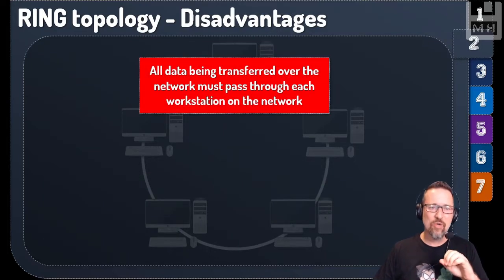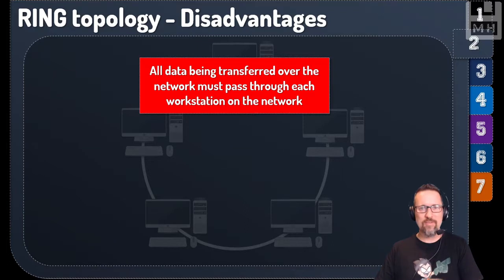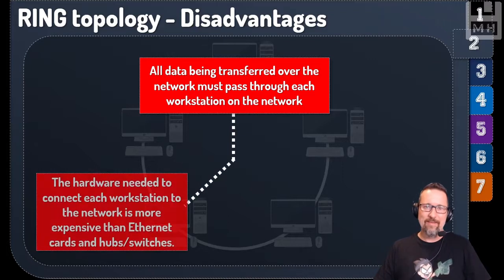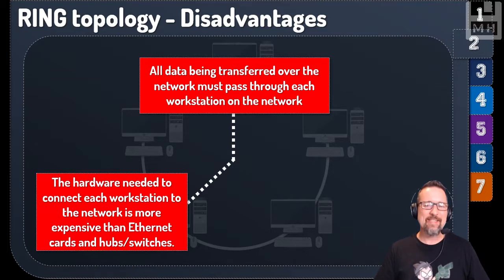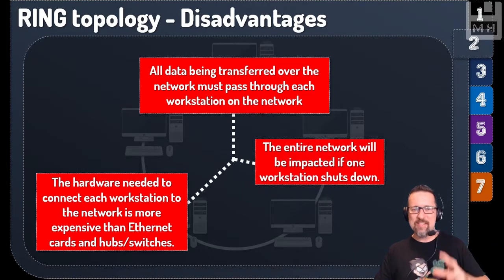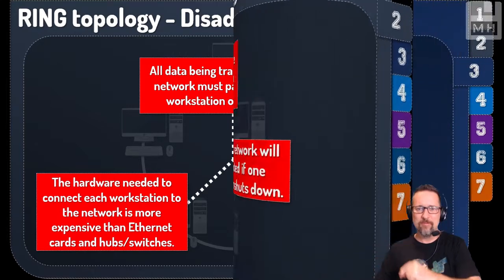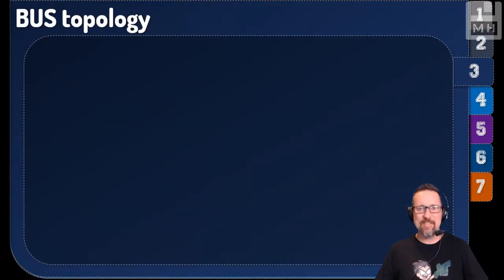Some disadvantages of ring topology: all data being transferred must pass through every single node on the network, which takes time. The hardware needed to connect workstations is more expensive than standard Ethernet cards, hubs, and switches. Also, the entire network is impacted if just one workstation shuts down, because the circular path is broken.